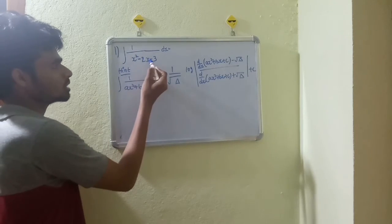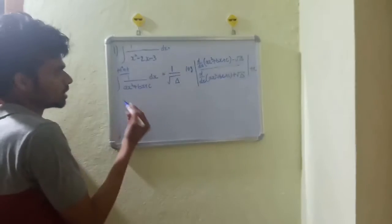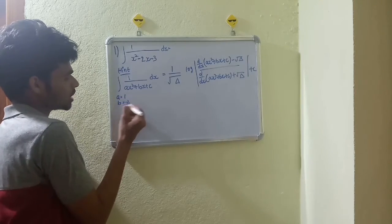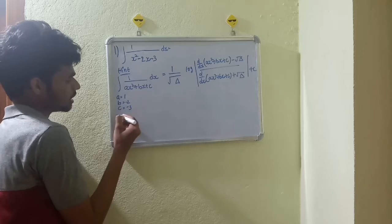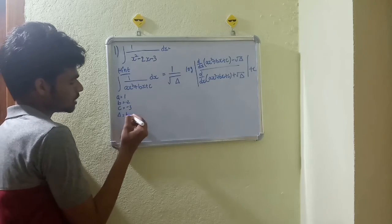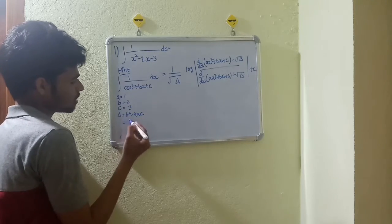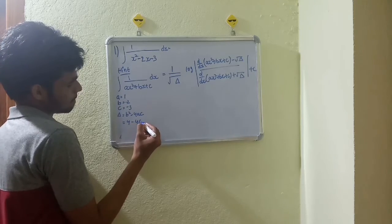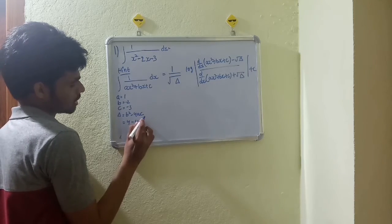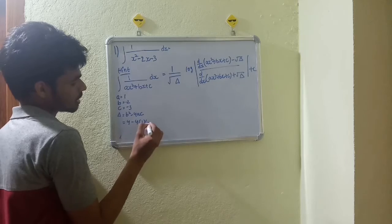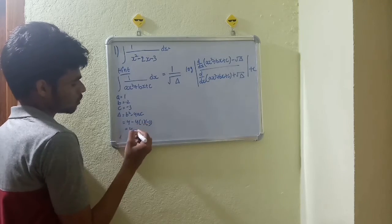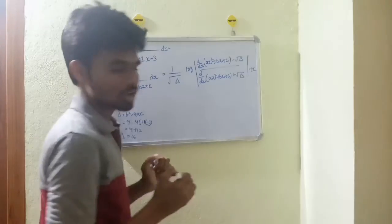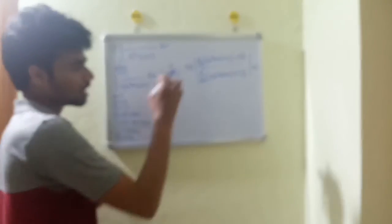Since b and c are both negative, the same formula is used. Here a equals 1, b equals minus 2, c equals minus 3. Delta equals b² minus 4ac: b² is 4, minus 4 times 1 times minus 3 gives 4 plus 12 equals 16. Delta value is 16.